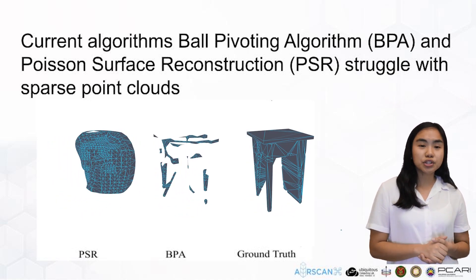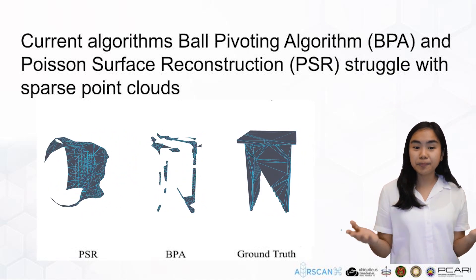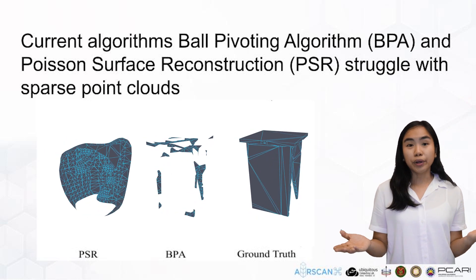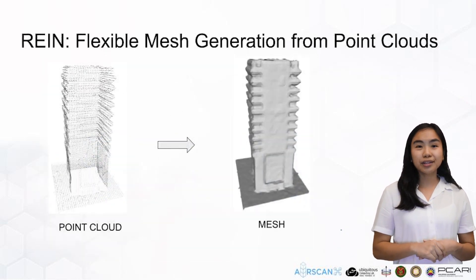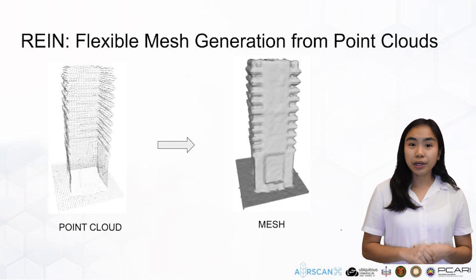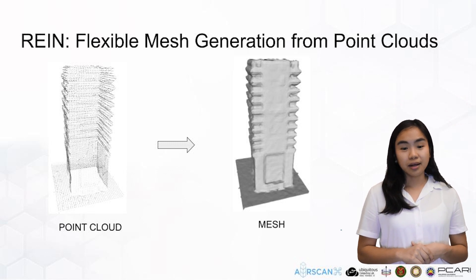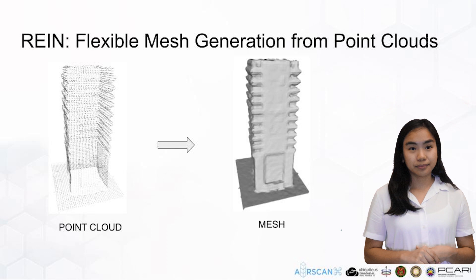To overcome the challenges presented by both BPA and PSR, we introduce RAIN — Recurrent Edge Inference Network. Inspired by GraphRNN, RAIN builds a mesh from the point cloud using a bottom-up approach.